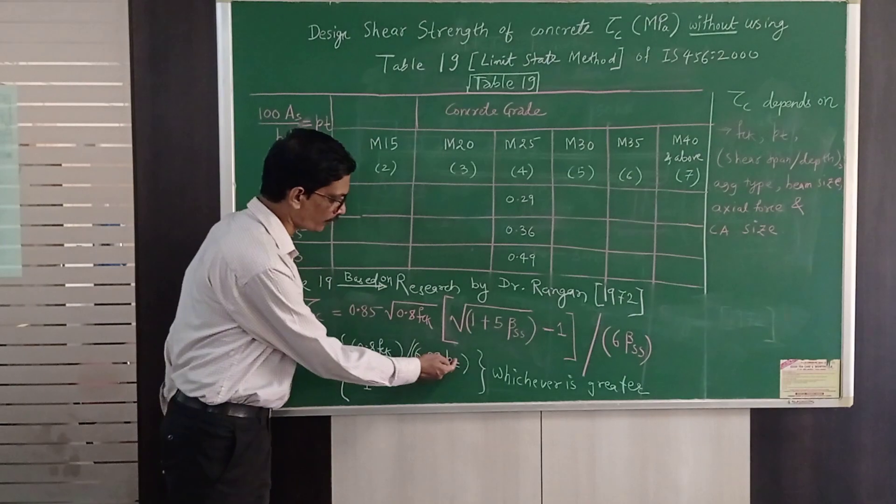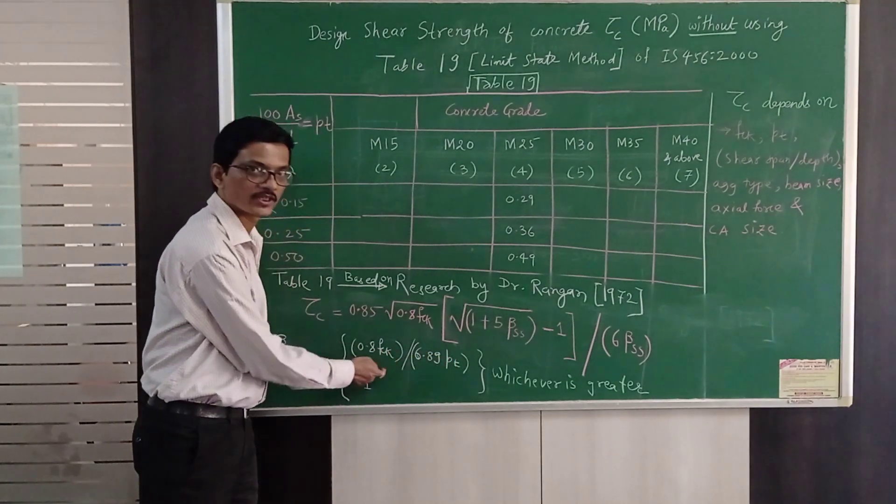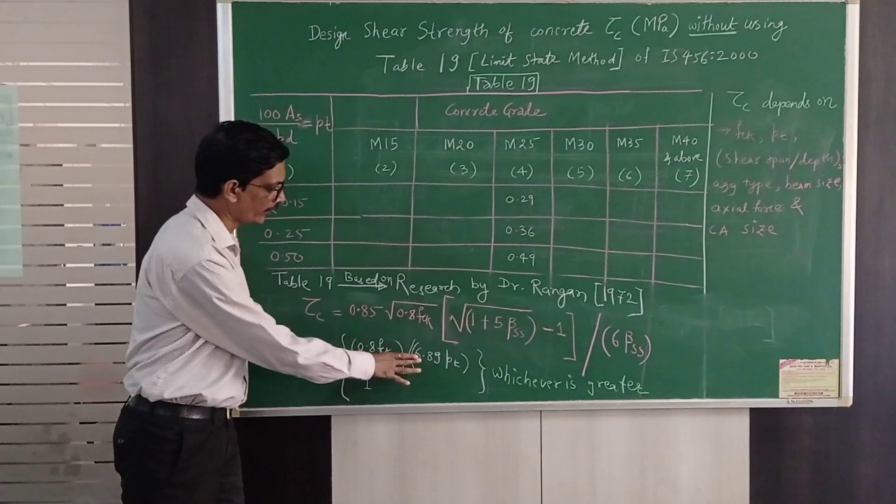Suppose I have percentage of 0.32 percent which is between these two values. So directly you have to substitute 0.32 here. We already know fck.